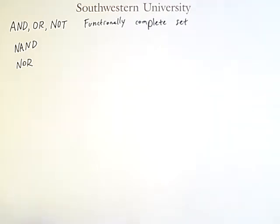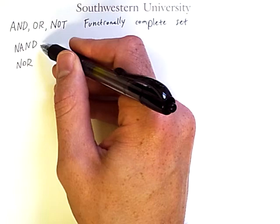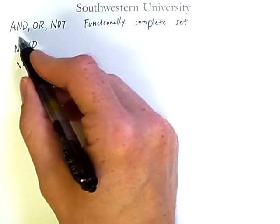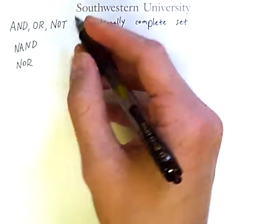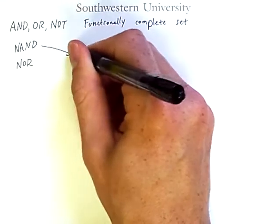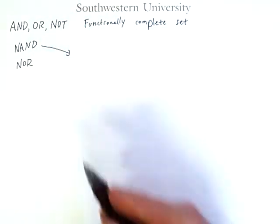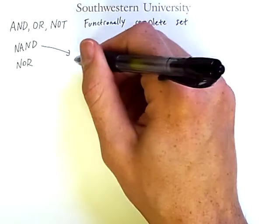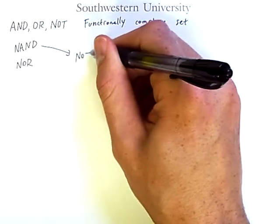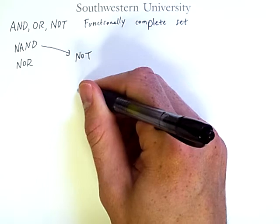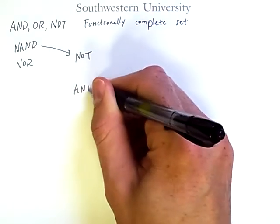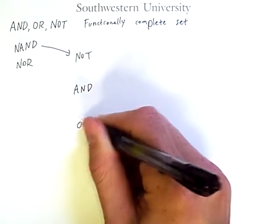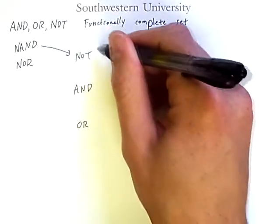Let's demonstrate how NAND can be used to compute any of these results. So, in order for NAND to be functionally complete, I must somehow be able to compute NOT, AND, and OR using only NAND gates.